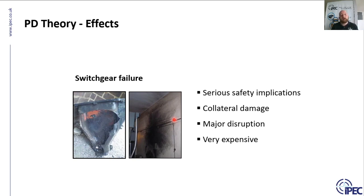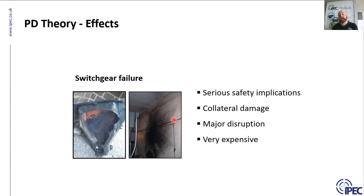Major disruption. Switchgear failures are very costly, they take quite a lot of time to repair, and whilst they are being repaired, the redundancy is gone. Most substations have two sides to the bus bar — if one fails, that bus bar is shut down while a repair is conducted, meaning your redundancy is completely gone and you're relying on one side of the substation to operate the whole network. It can be very expensive and disruptive.